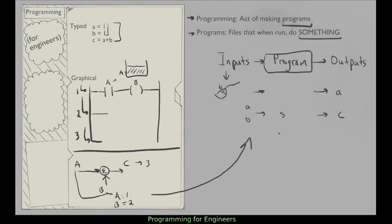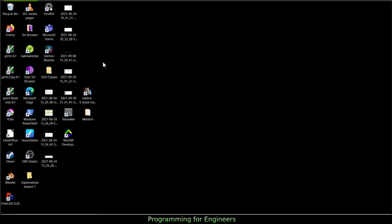Just as you can use inputs in graphical programming, you can also use inputs in typed - there's no reason A and B couldn't be inputs in a typed language. So that's the overall picture of what programming is: you write some typed code or use a graphical tool, and it generates a program you can run. It may take inputs or have everything defined internally, and it creates whatever outputs you want.